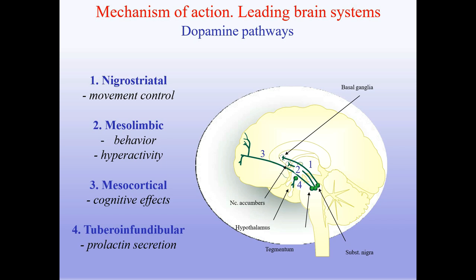Mechanism of action on leading brain systems — dopamine pathways. There are four pathways: first, nigrostriatal — movement control; second, mesolimbic — behavior and hyperactivity; third, mesocortical — cognitive effects; fourth, tuberoinfundibular — prolactin secretion.